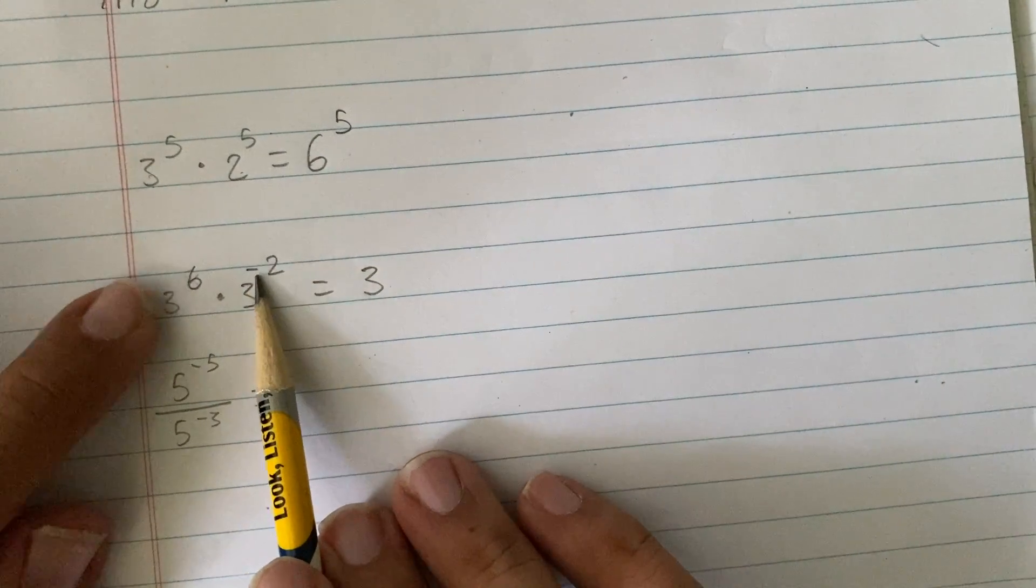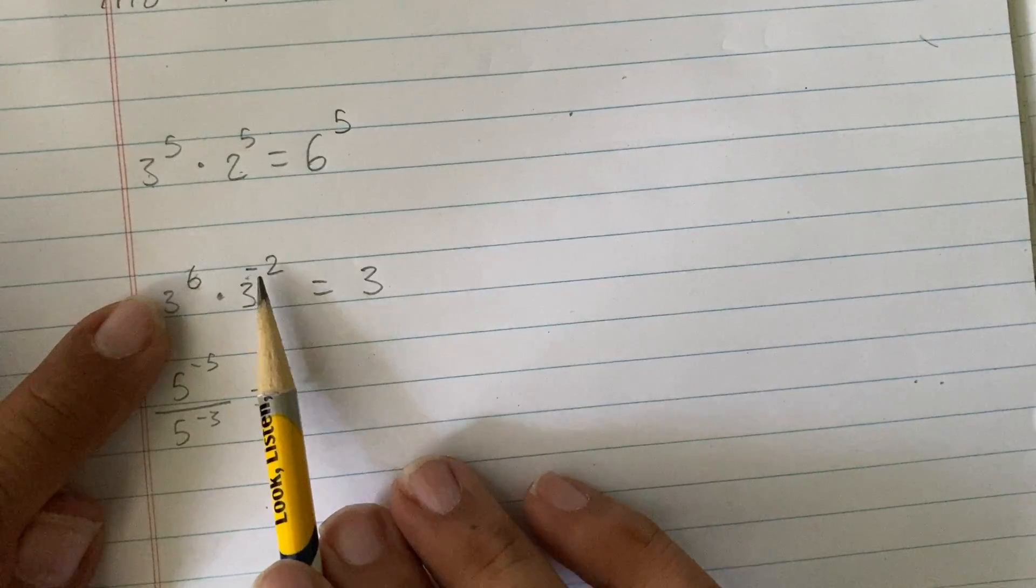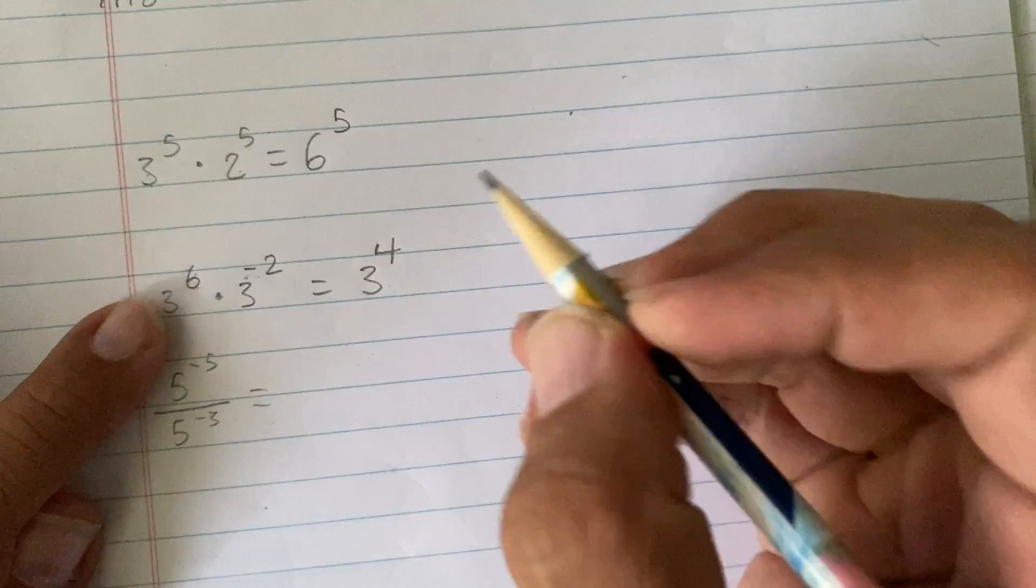The second thing you check is, are the signs the same or different? If they are different, these two numbers are going to subtract, making the answer 4.